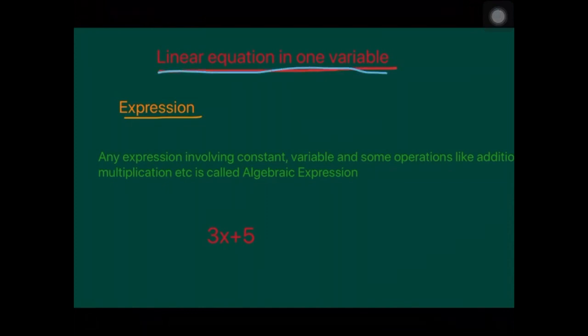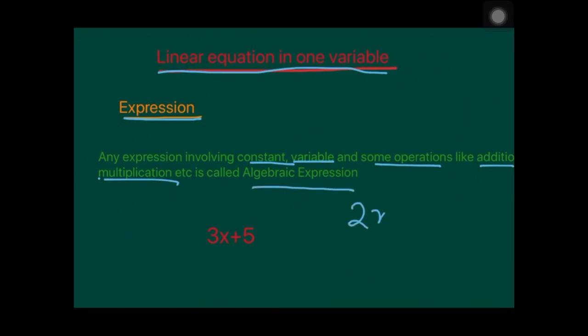We'll start our next chapter: Linear Equations in One Variable. Before starting, we should know a few things. The first one is expression — a mathematical expression that involves constants, variables, and some operators like addition and multiplication is known as an algebraic expression. For example, 2x plus 5 or 2x plus 4 — these are expressions.